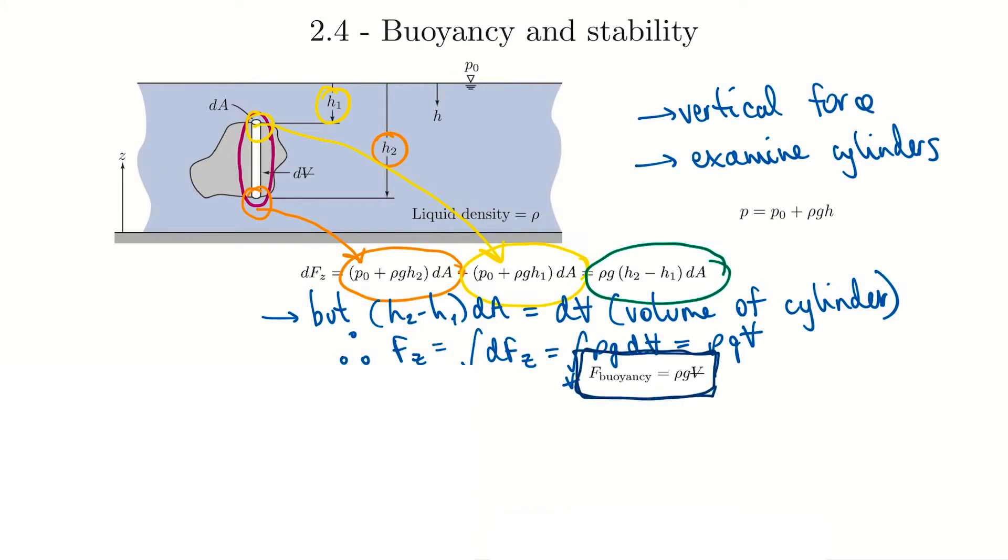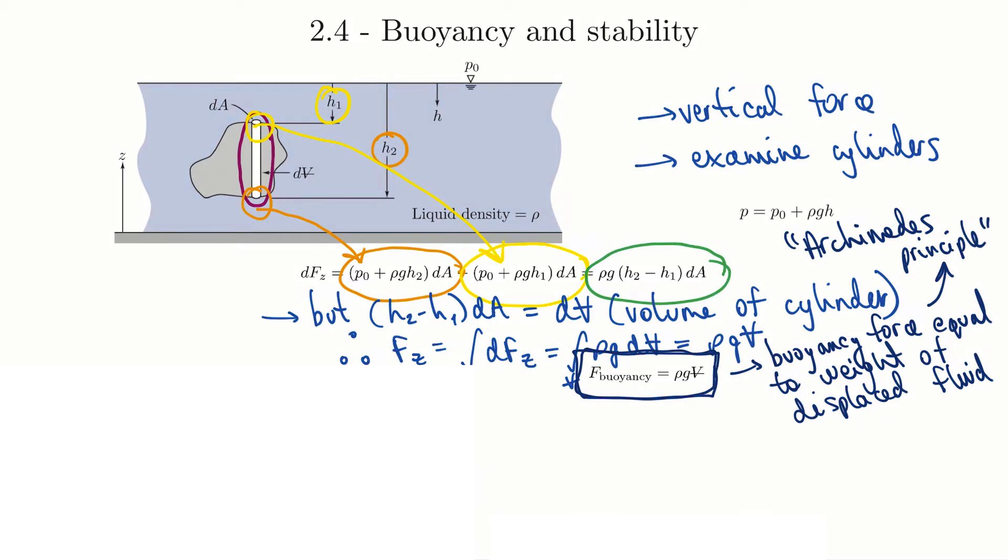Rho Gv is the weight of the fluid that was displaced by this object. So we end up with the buoyancy force being equal to the weight of the fluid that we displaced. And this relationship is also known as Archimedes' principle, based on the famous story of how Archimedes measured the gold content in the king's crown by placing it in water and seeing how much water was displaced.